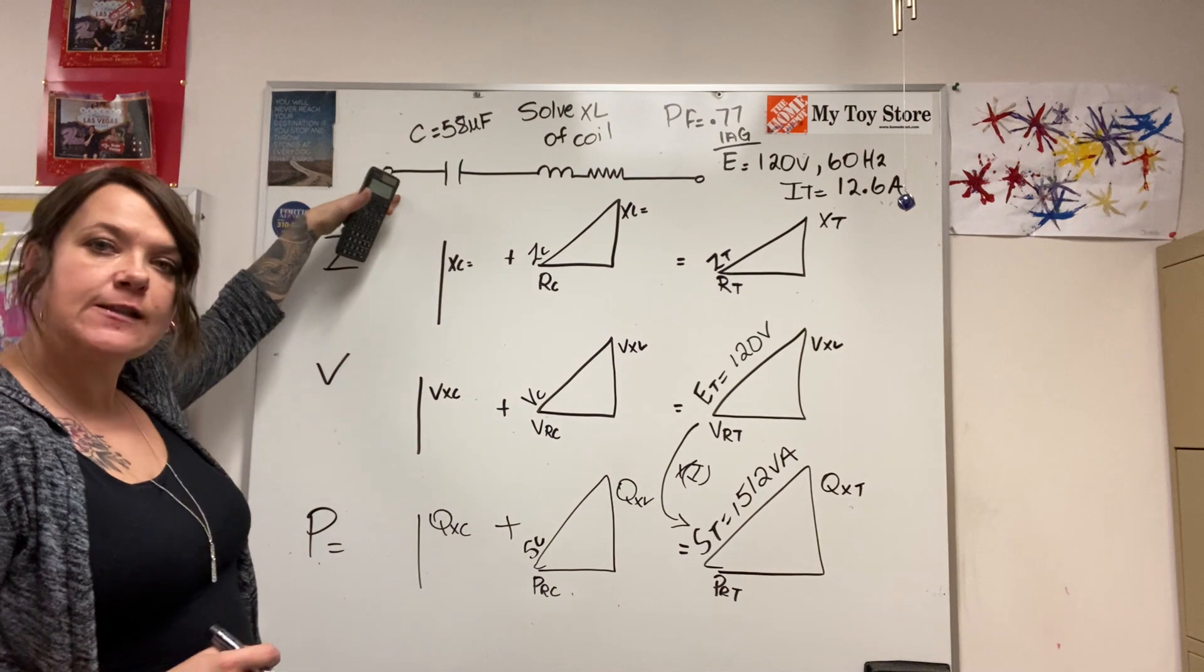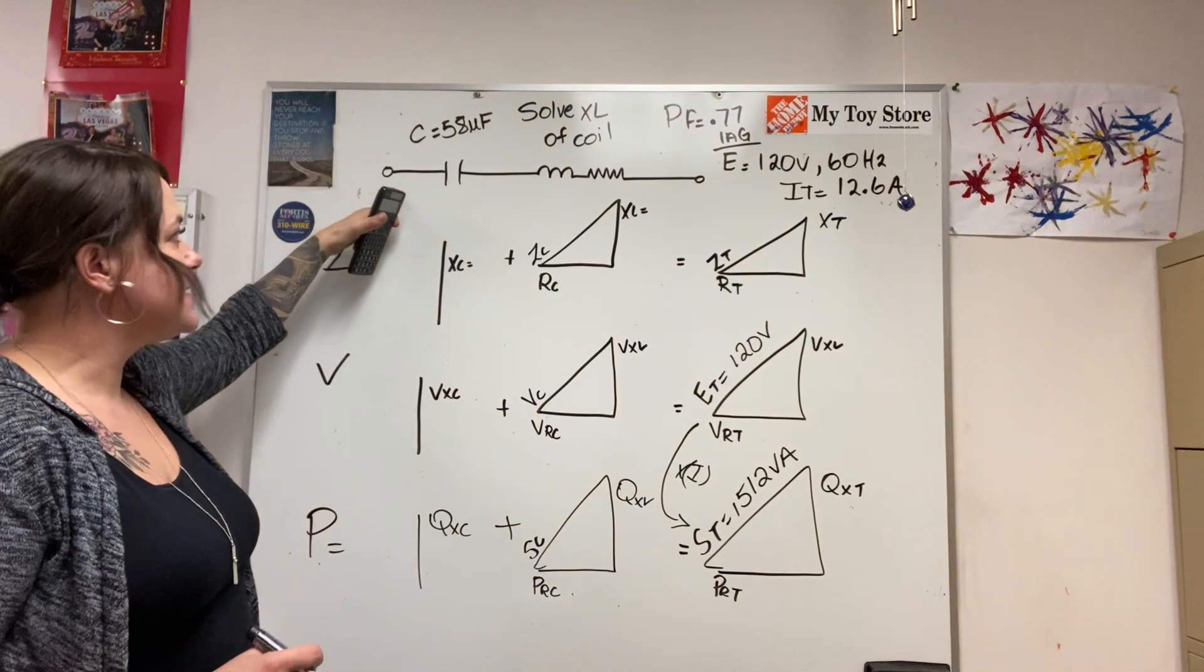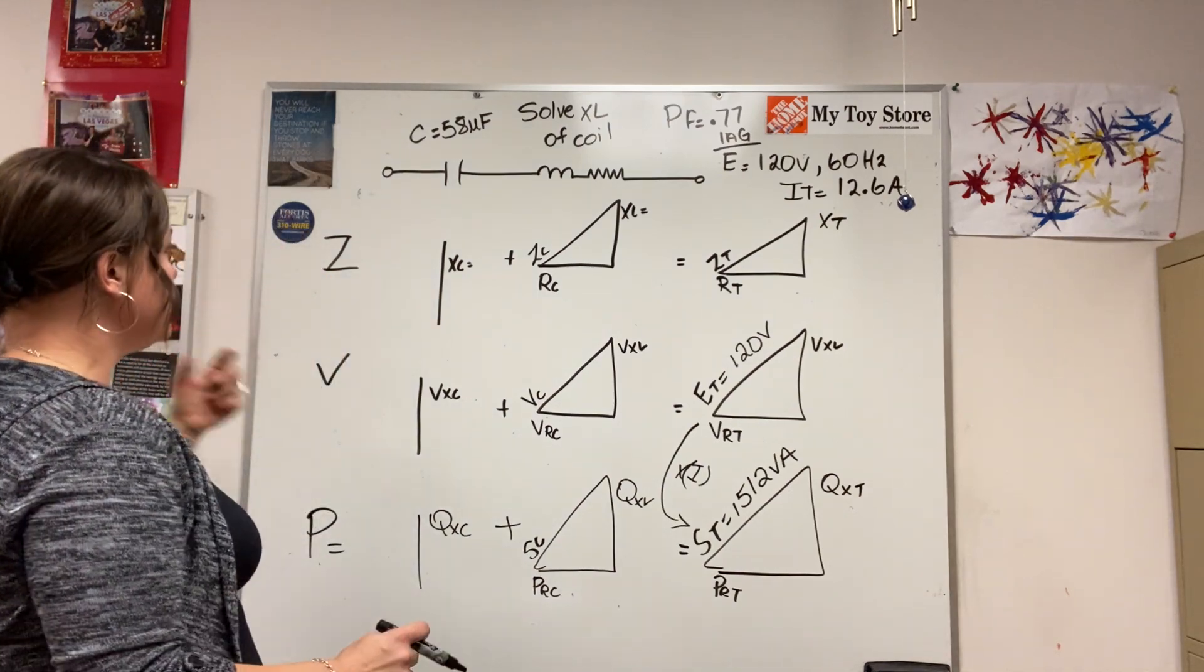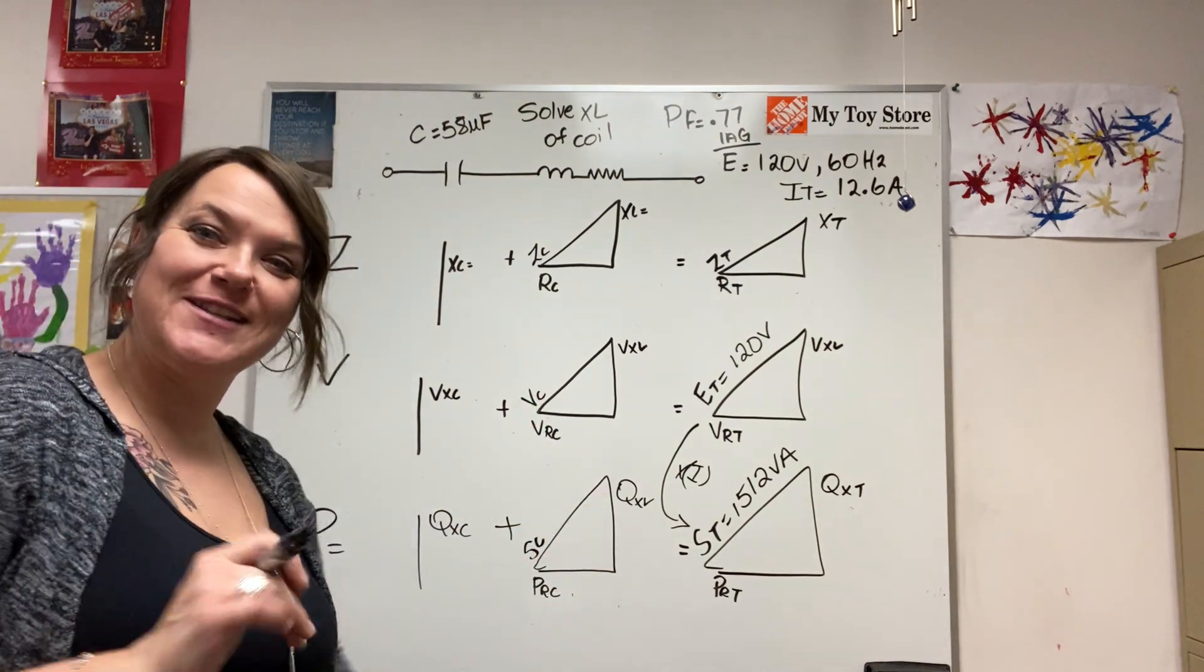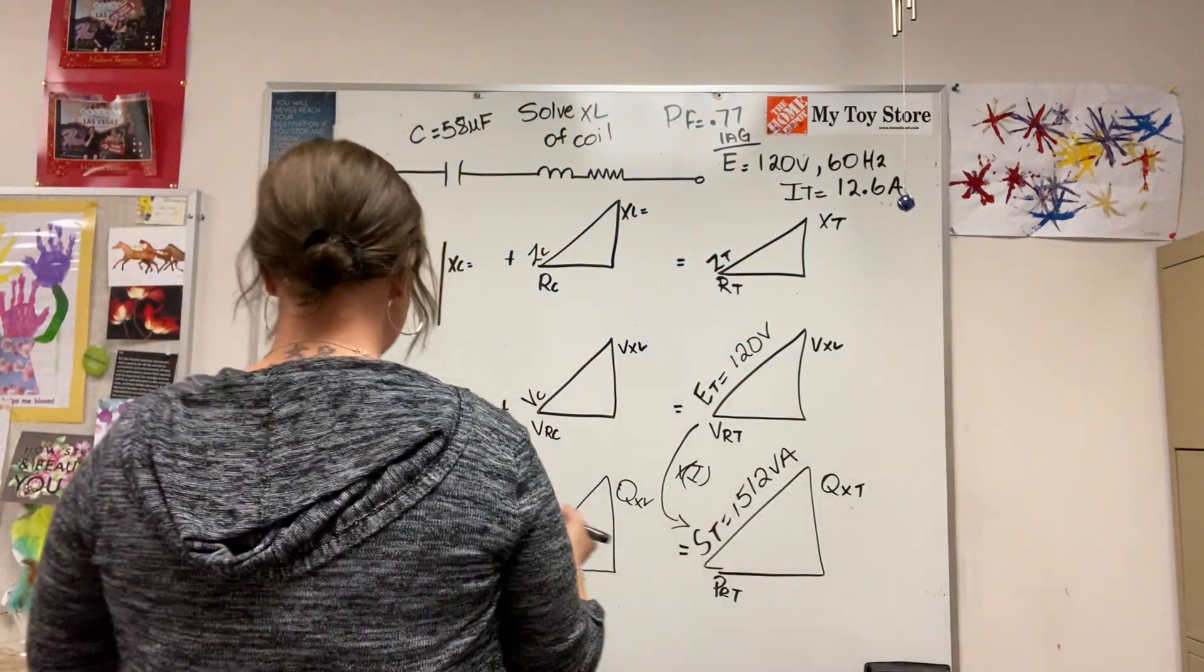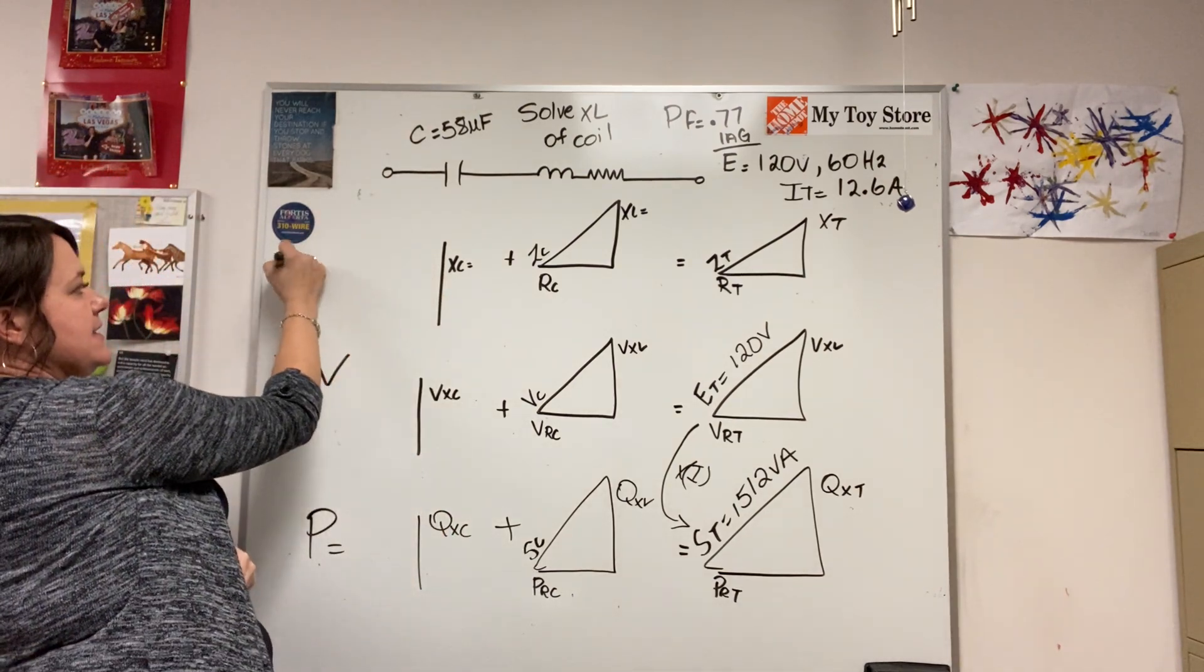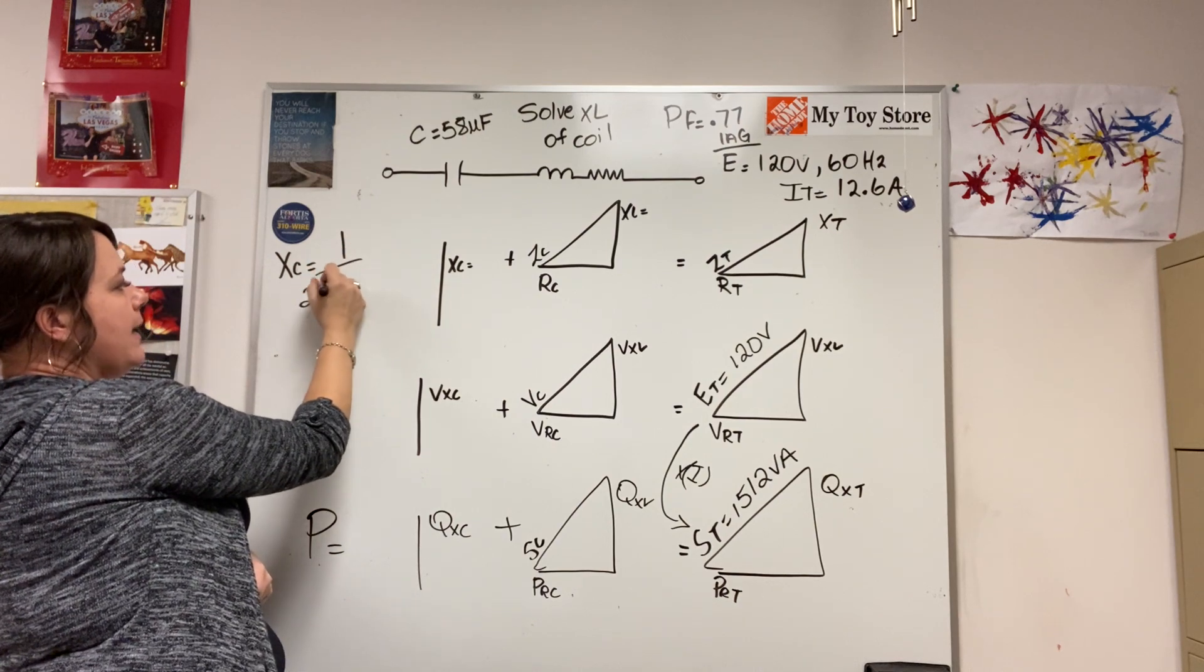I need to take this capacitance and convert it into capacitive reactance because that is the variable that opposes current flow. So let's do that. I have no room, I hate this board, but let's find a space. I'll write on the wall if I have to. Let's just remove this for a moment and do XC.